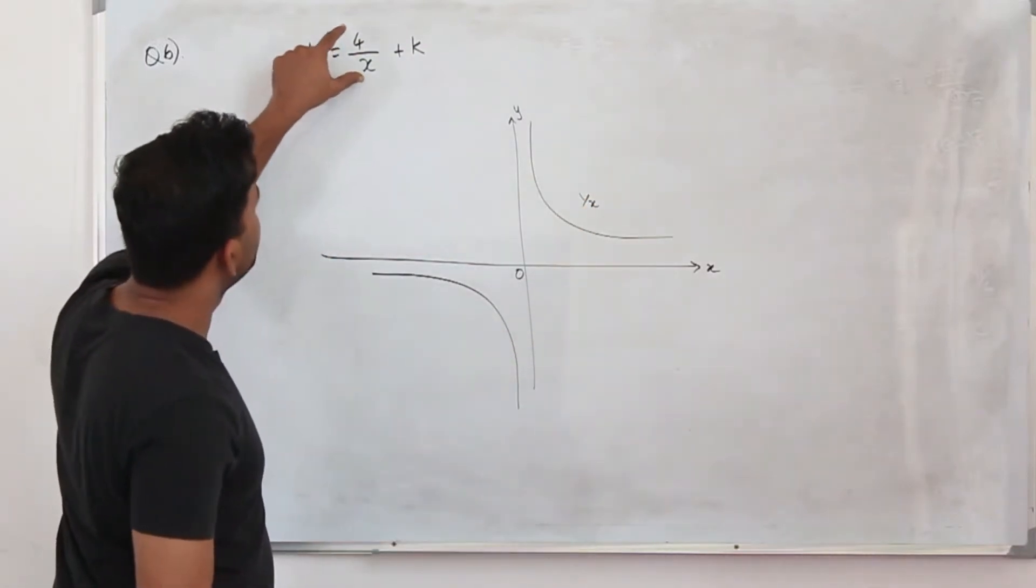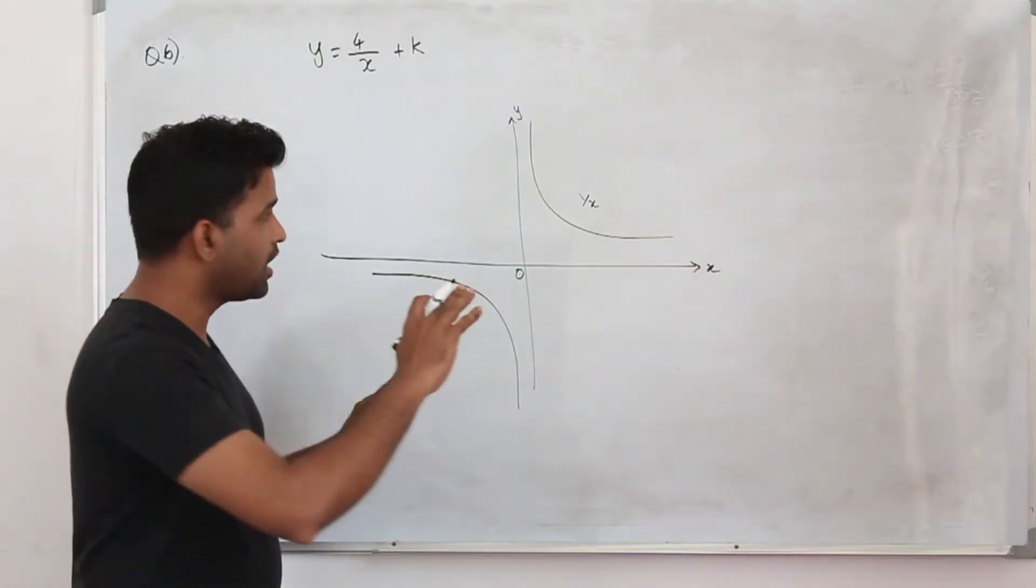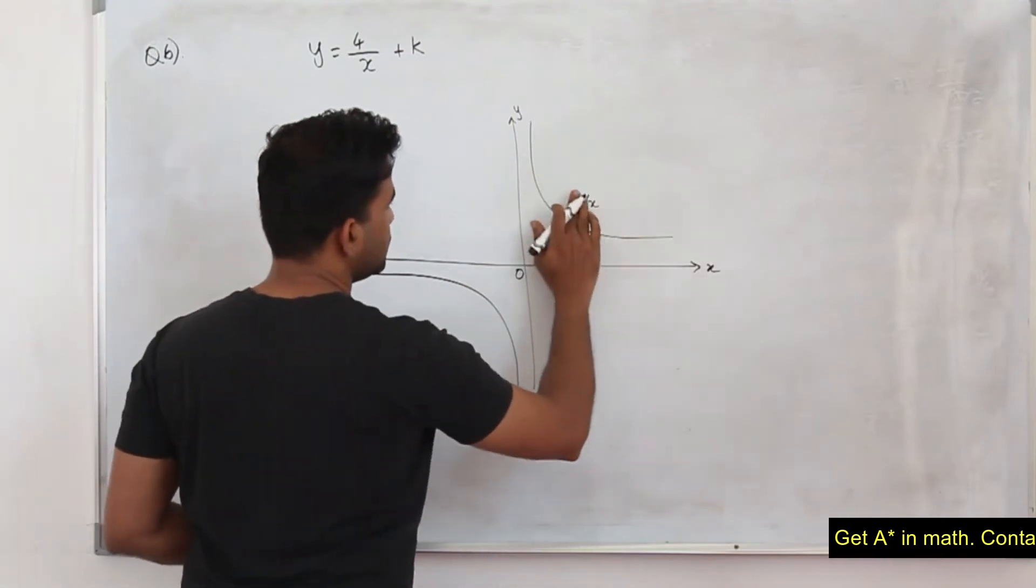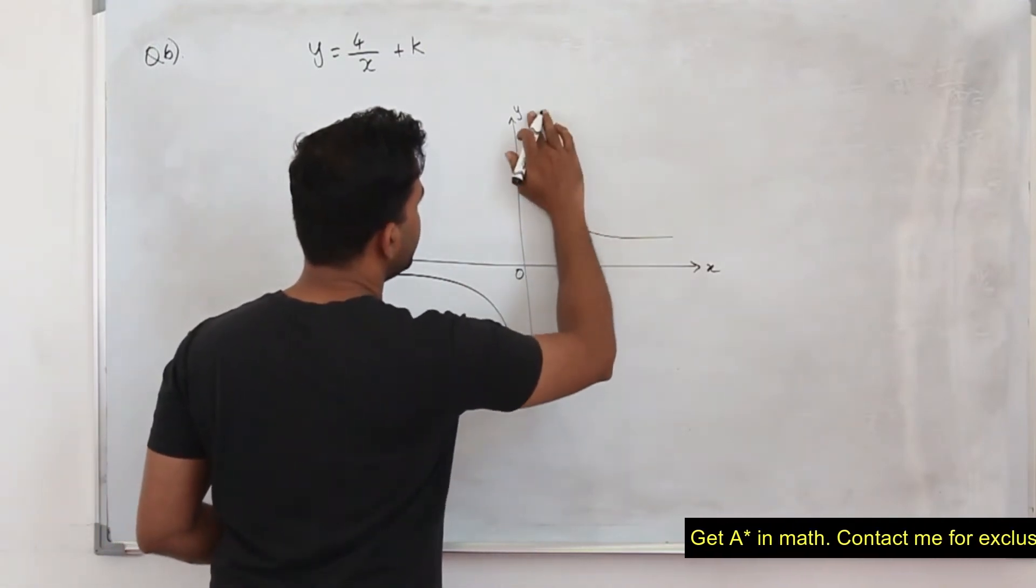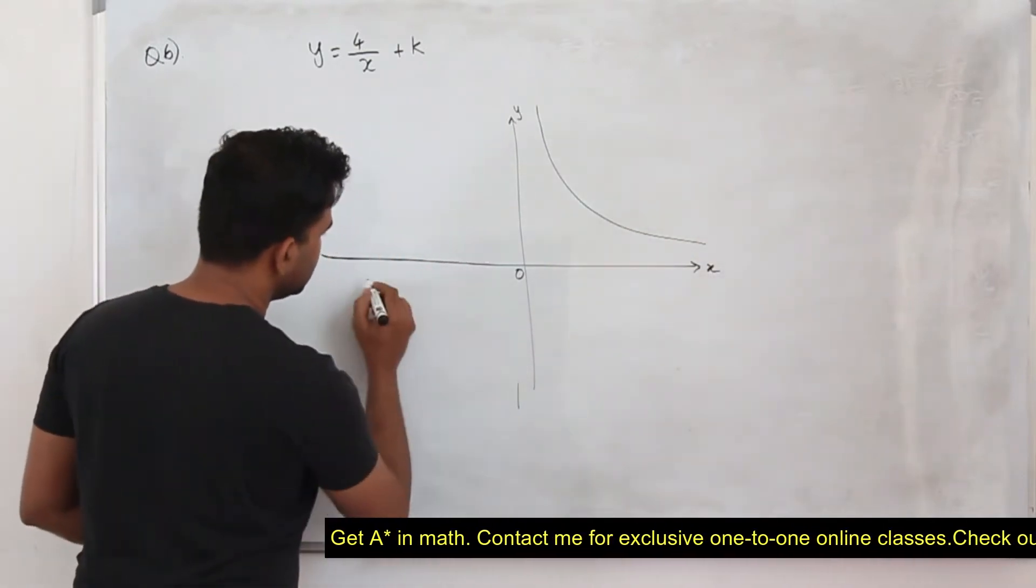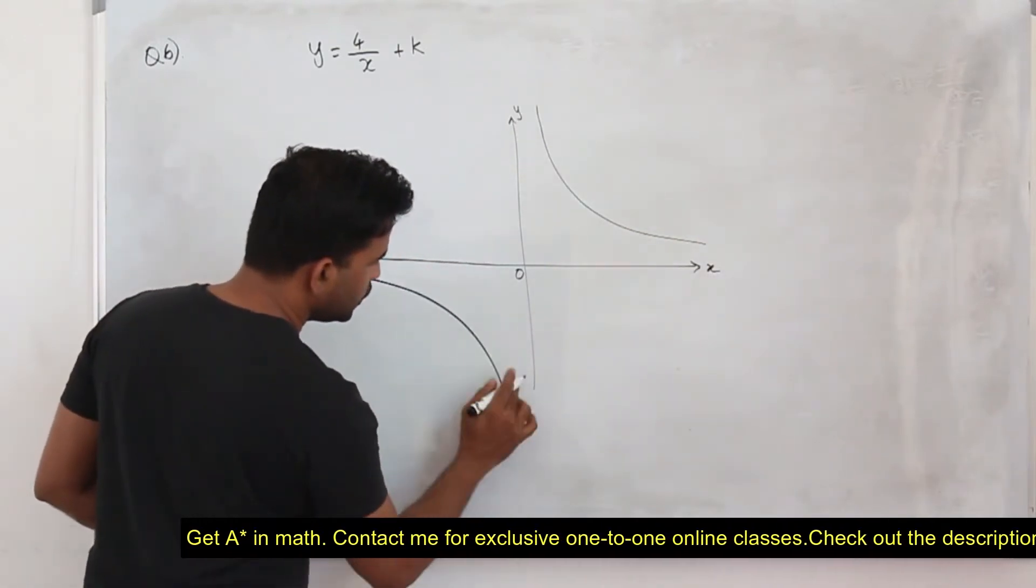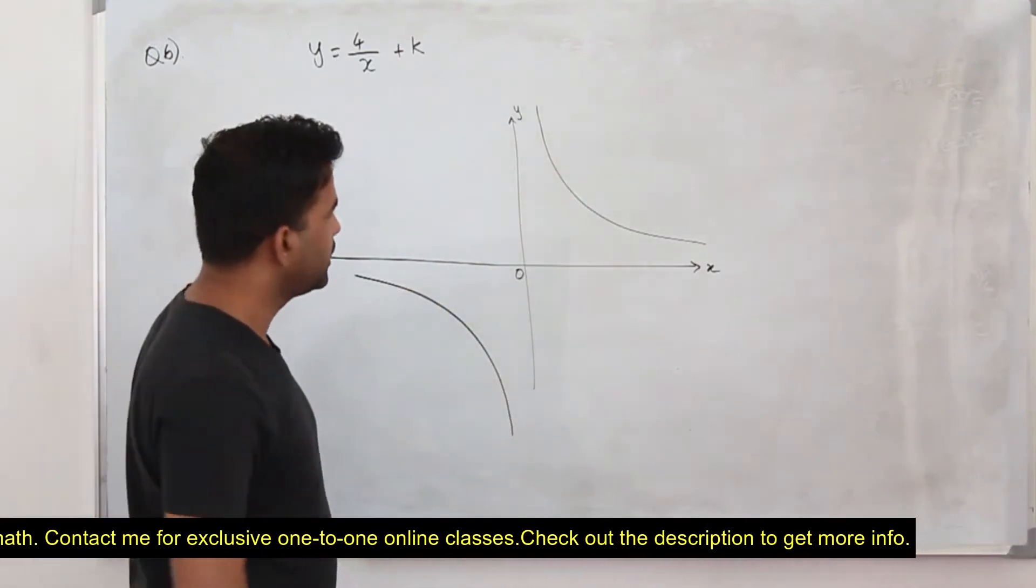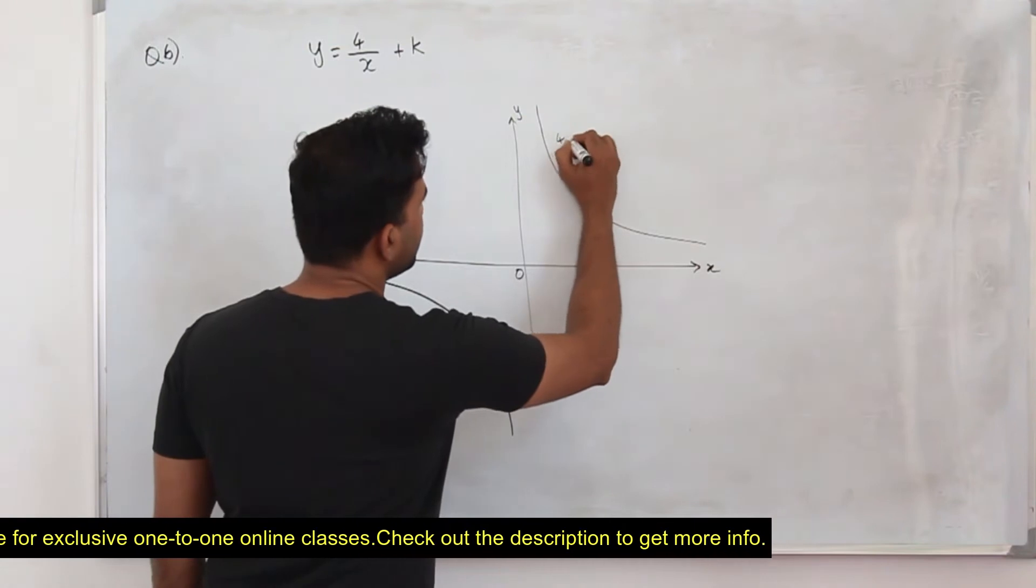And then if you sketch 4 upon x, sketch the graph a little away from the origin. So now our 4 upon x will be somewhere here. You don't need to plot any points as long as it's a bit away from origin. This is our graph 4 upon x.